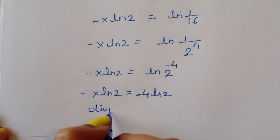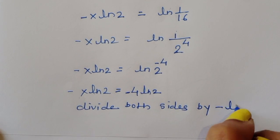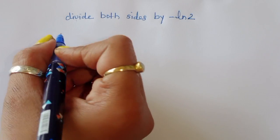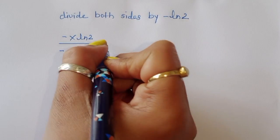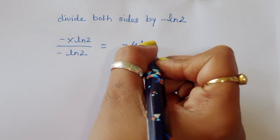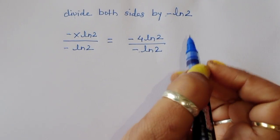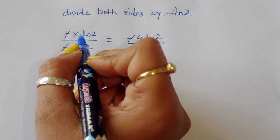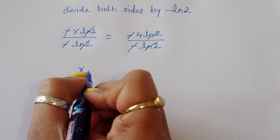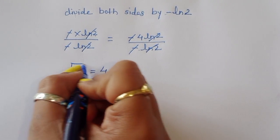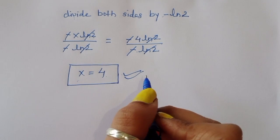Dividing both sides by minus ln of 2, the minus signs cancel and ln of 2 cancels from both sides, giving us x is equal to 4. So the final answer is x equals 4. This is the correct solution. Thank you.